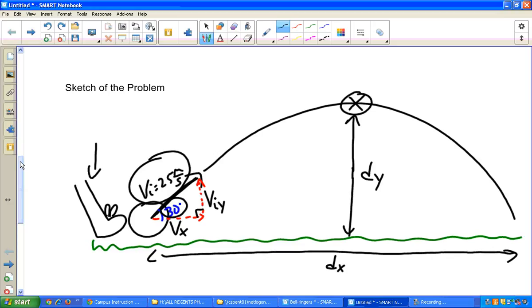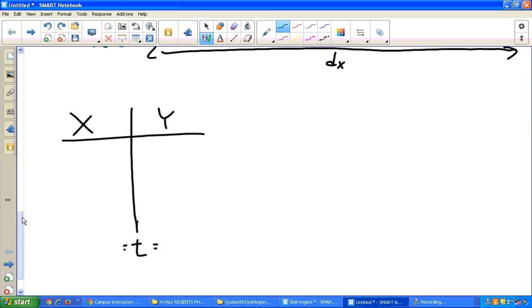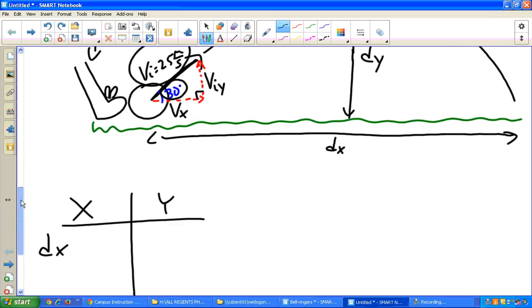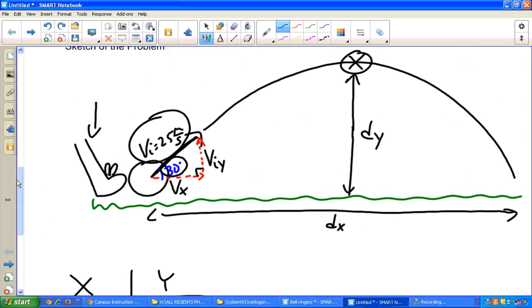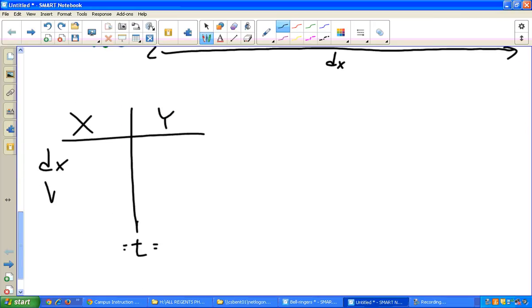Now, as I always do, I always start my problems by drawing a table with my x and y components. On my x side, we have dx. We know that when the ball is kicked, nothing is influencing it in the horizontal direction, because gravity is only pulling it down in the vertical direction, so it's moving at a constant speed. I'm going to call that Vx. And of course, we have time down here in the bottom.